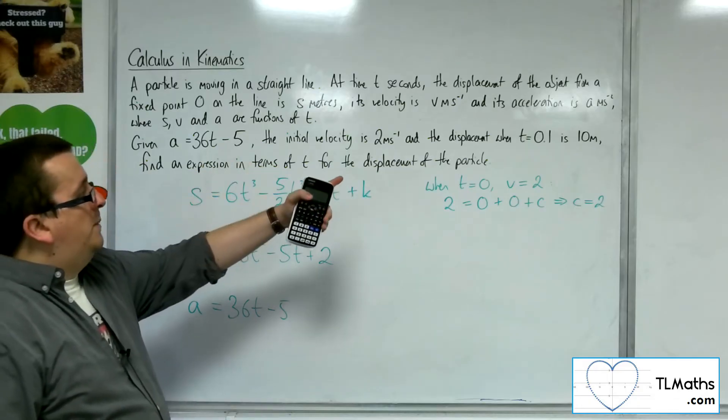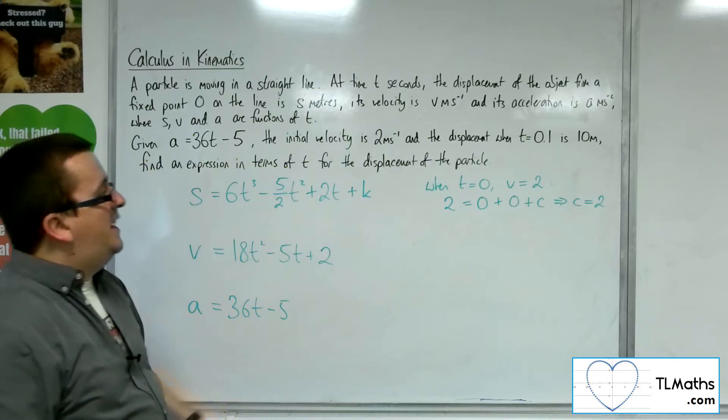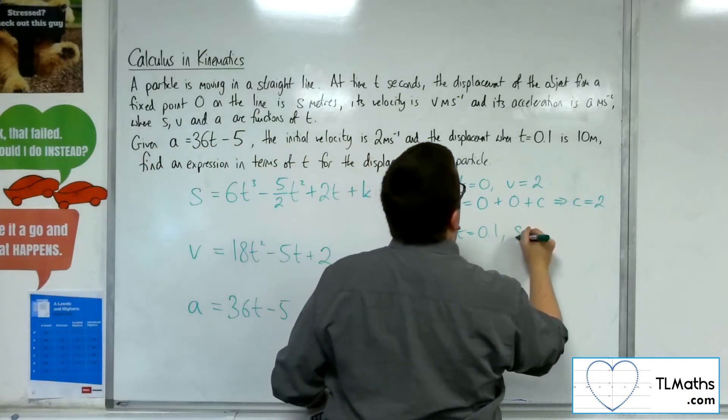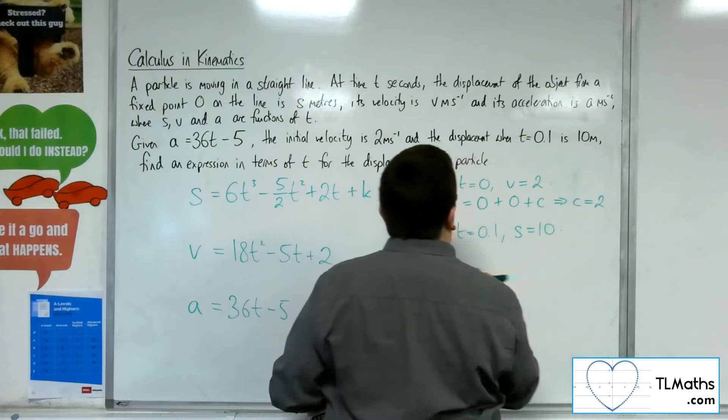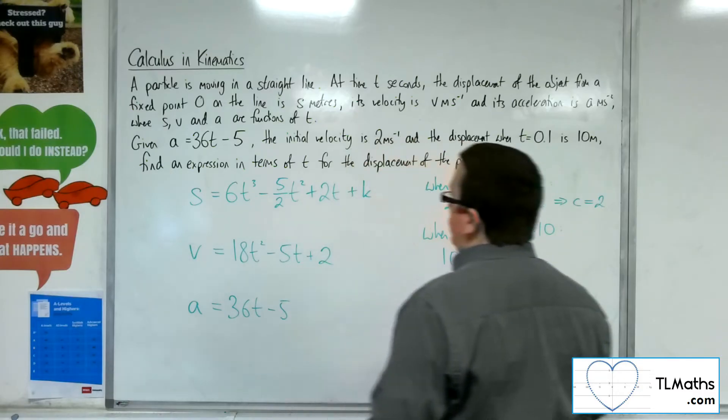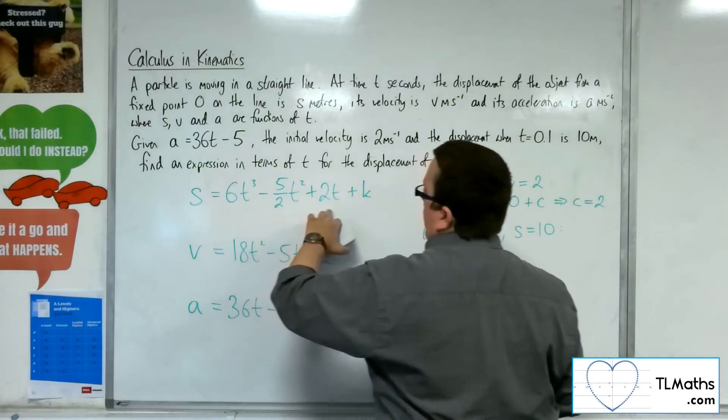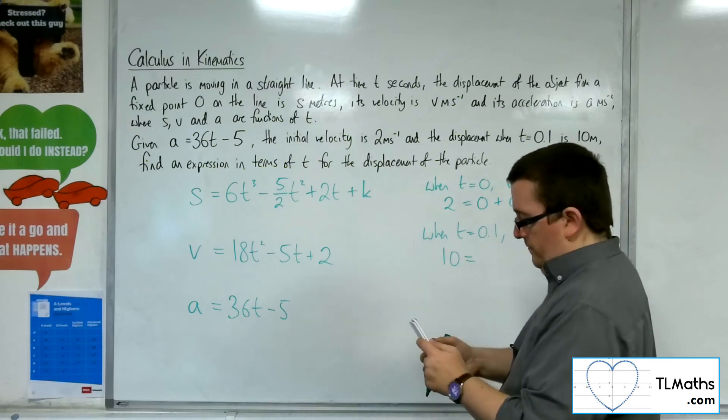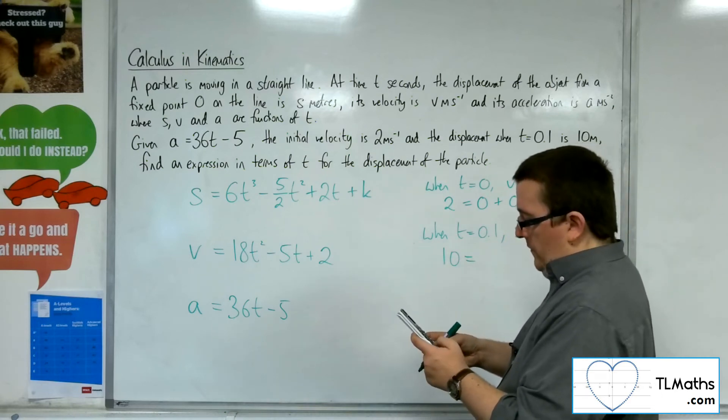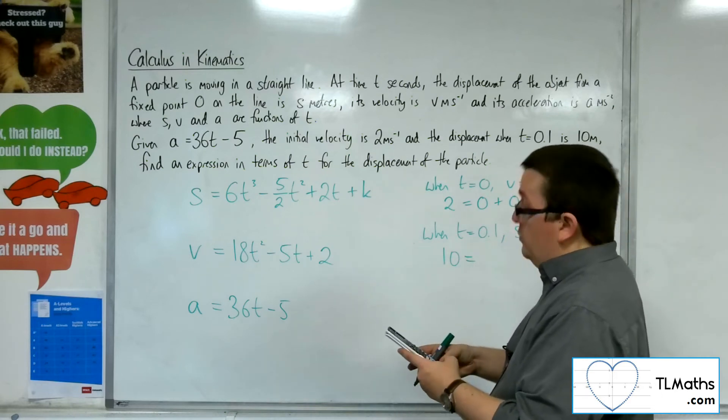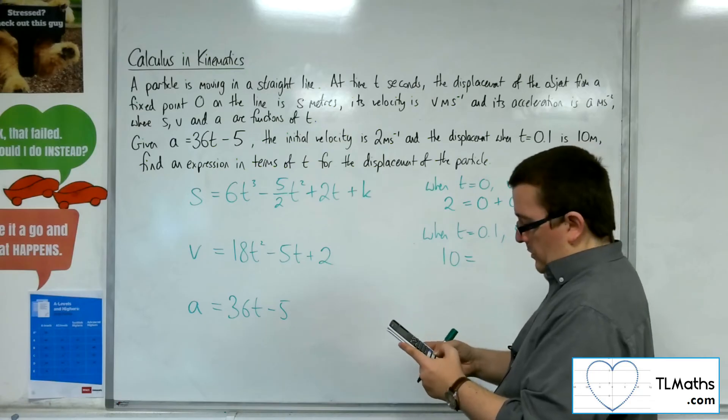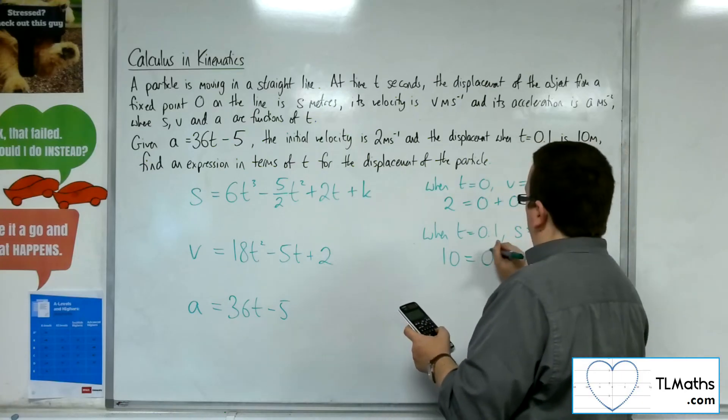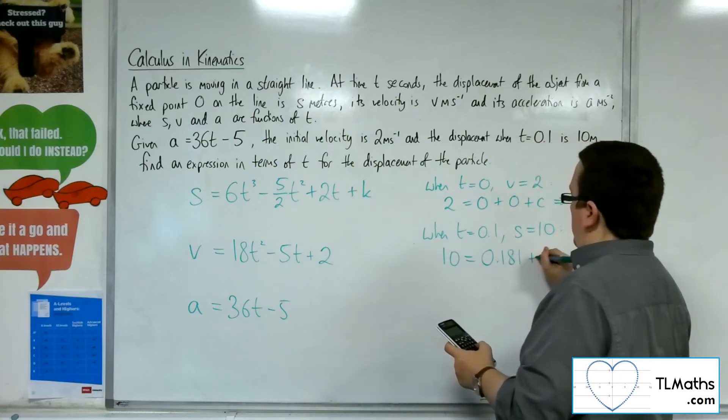Now I'm told that the displacement when t is 0.1 is 10 metres. So when t is 0.1, s is 10. So we've got 10 is equal to... Now I've got 0.1 going into each of these. So I've got 6 lots of 0.1 cubed, take away 5 halves times 0.1 squared, plus 2 lots of 0.1. And that gets to be 0.181 plus k.